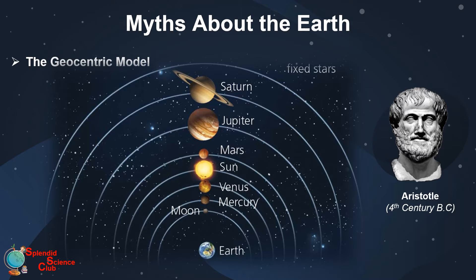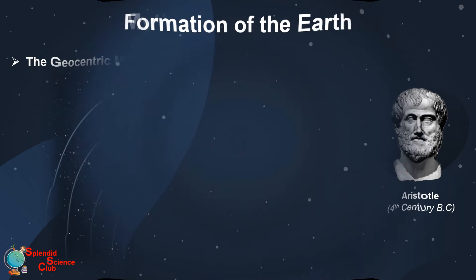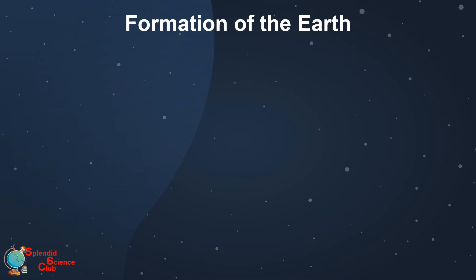Then by 5th century BC, the Greek philosophers suggested the geocentric model of the Earth. They believed the Earth is in the center of the solar system and other planets and the Sun are orbiting around it.